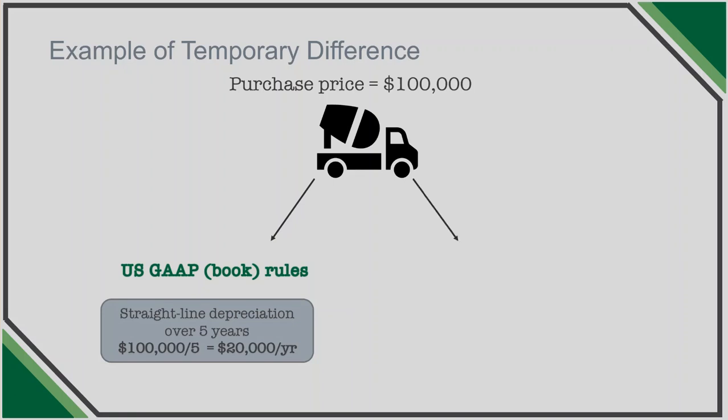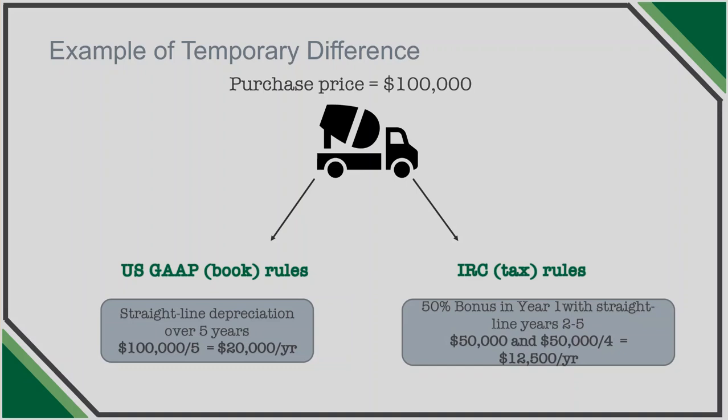The Internal Revenue Code, on the other hand, under IRC Section 168 provides the option to use bonus depreciation, whereby the company may depreciate a full 50% of the asset in year one and the remaining undepreciated balance using straight-line over the remaining useful life of four years. In this instance, the company will get a tax deduction of $50,000 in year one and $12,500 in each subsequent year. Note that IRC Section 168K has been modified to allow for different amounts of bonus depreciation depending on the year placed in service — please refer to the Internal Revenue Code for the latest amounts and limitations.